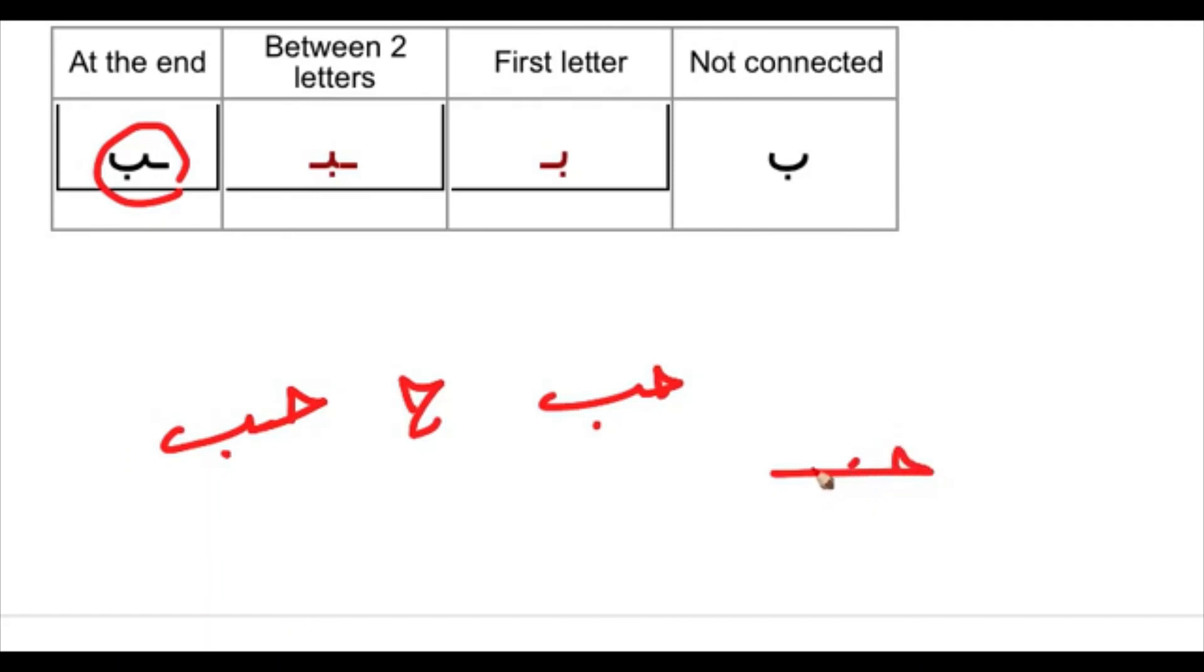This is the HA, and I made the dots here. HUB. Very simple. Alright.